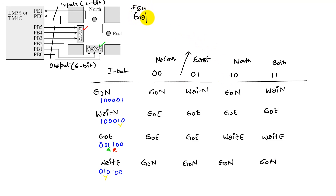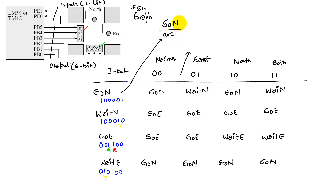Let's look at the FSM graph as a visual representation of this table. We have a go north state, and I'm going to write its output in hex as 0x21. Since we have to dwell in the state for some time, the dwell time is 3,000 × 10 milliseconds, which is a 3-second delay, and then we transition out as the input requires.